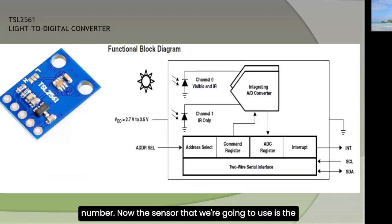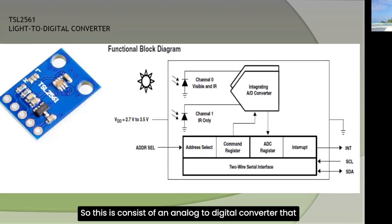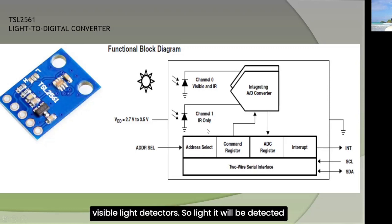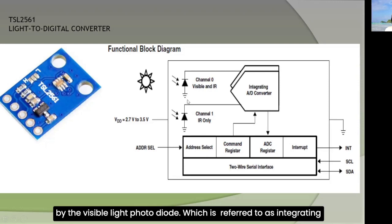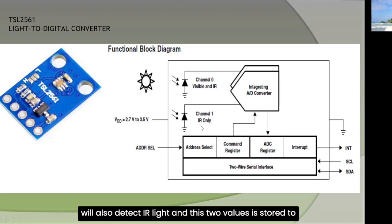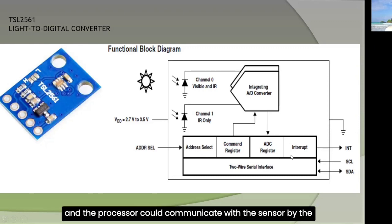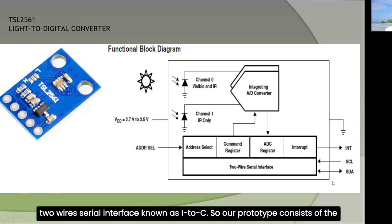The sensor used is the TSL2561, a light-to-digital converter. It consists of an analog-to-digital converter that detects light received by two photodiodes — one for visible light and one for infrared. Light detected by the visible light photodiode and the infrared photodiode are fed to an integrating analog-to-digital converter, and these values are stored for retrieval by a processor via the two-wire serial interface known as I2C.